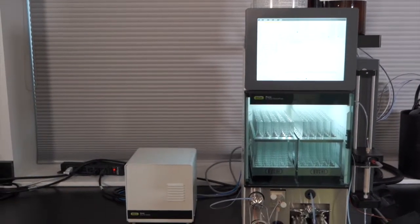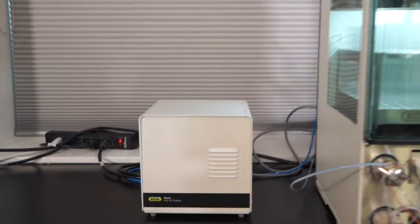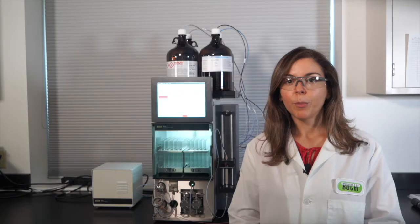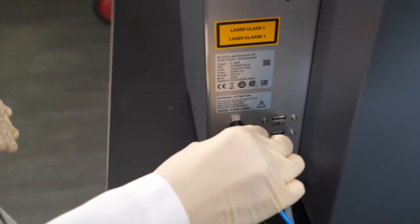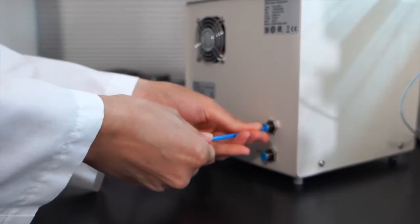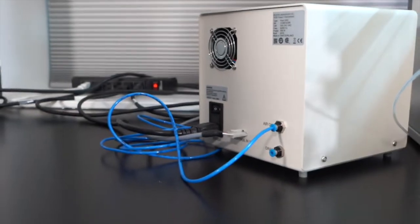Dry air is required to utilize the ELSD and atomize samples going to the nebulizer. A push lock connection for air can be found on the back of the instrument. Buchi offers a dry air supply which communicates with the Pure only pushing the air to the system as needed, eliminating the need for a nitrogen gas source. The air is also used to purge columns at the end of separation.